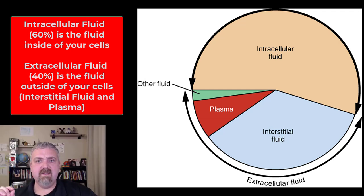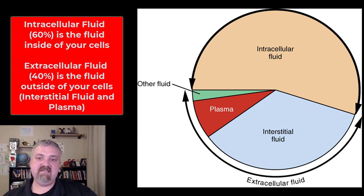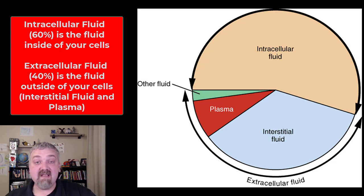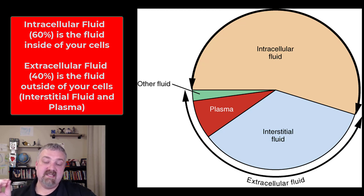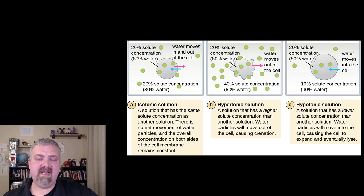Here we see the total body water. Intracellular fluid is about 60% like we mentioned, and then the other 40% is going to be the extracellular fluids plus that little sliver of other. This means the average-sized male has about 7 gallons — about 25 liters — of fluid inside their cells, which is pretty amazing. And it's potassium and protein that holds that water inside your cells, while sodium plays a big role in pulling water out of your cells.